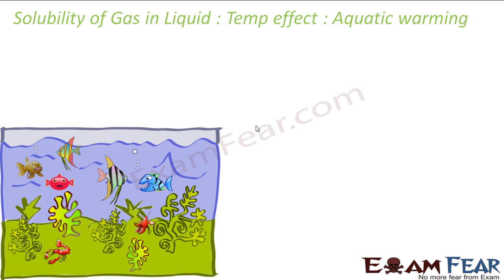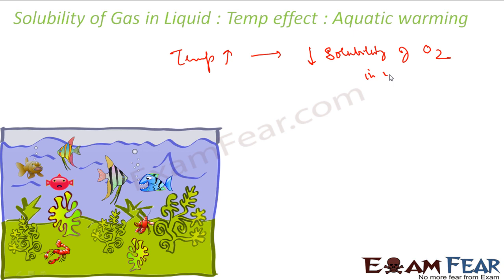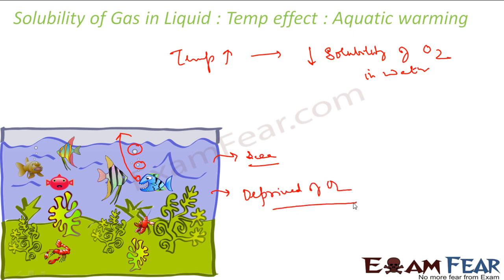Now let's talk about aquatic life quality. As I mentioned, an increase in temperature decreases the solubility of gas in liquid — in this case, oxygen in water, as seen when boiling water releases oxygen gas. Due to global warming, the temperature of the earth and of sea water is increasing. As a result, more and more oxygen comes out of the sea water into the air. The sea water is deprived of oxygen, which means aquatic life inside is also deprived of oxygen — having an adverse impact on aquatic life.